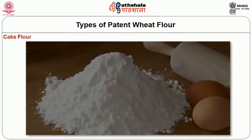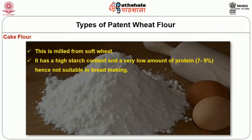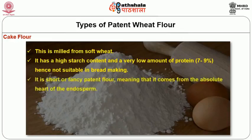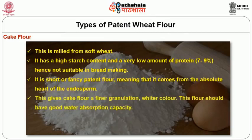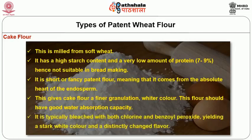Cake flour is milled from soft wheat. It has a high starch content and a very low protein content of 7 to 9 percent, hence it is not suitable for bread making. It is a short or fancy patent flour, meaning it comes from the absolute heart of the endosperm, giving it a finer granulation and white color. This flour should have good water absorption capacity. It is typically bleached with both chlorine and benzoyl peroxide, yielding a stark white color and a distinctly changed flavor.